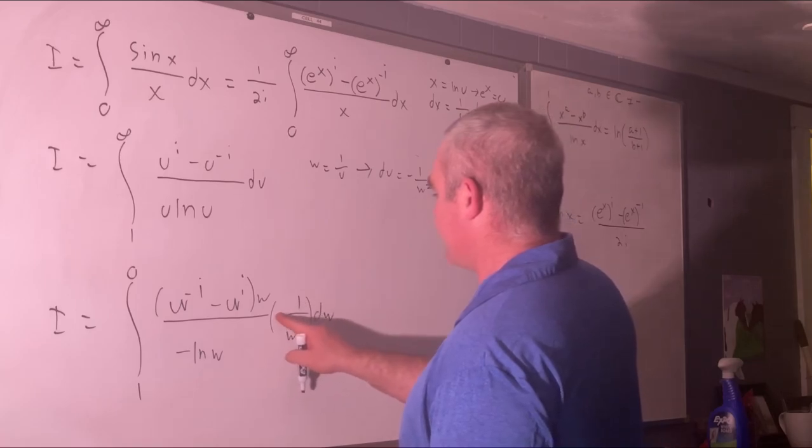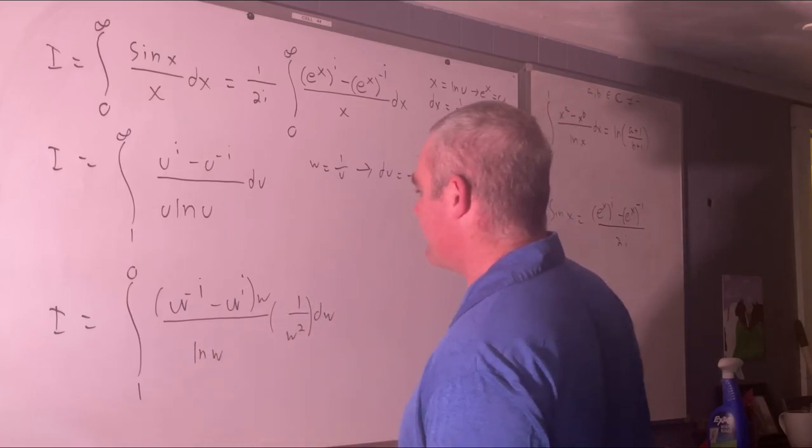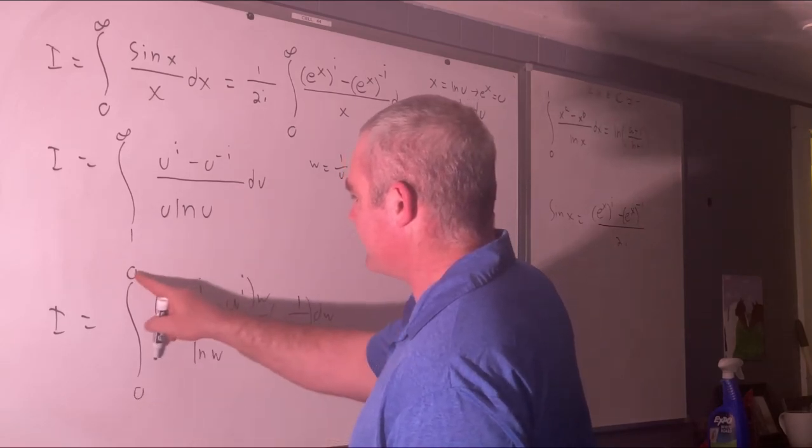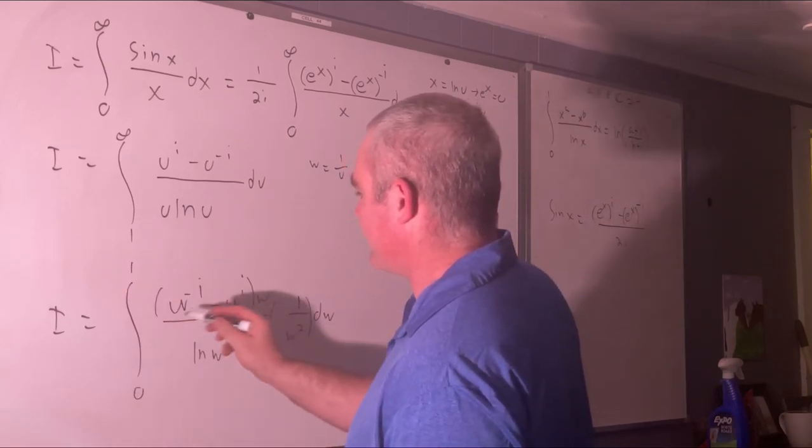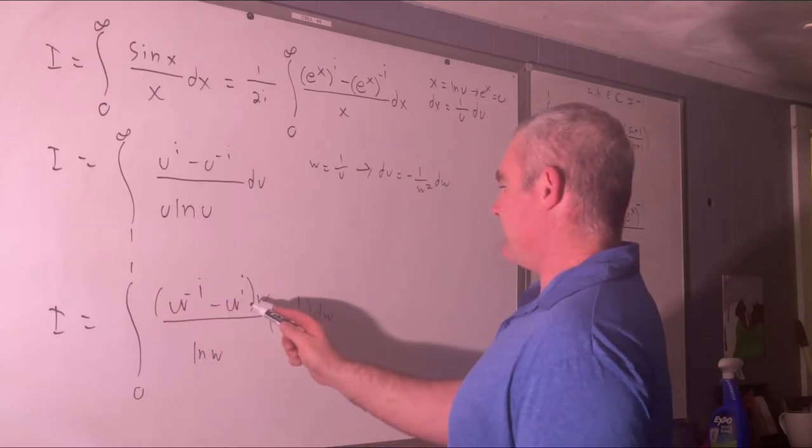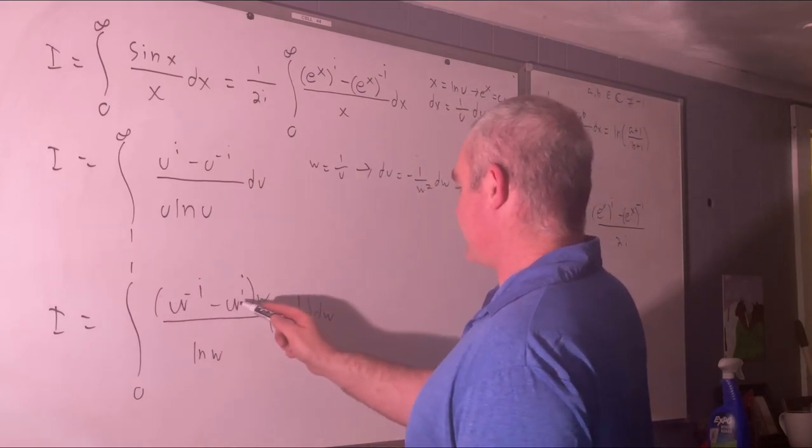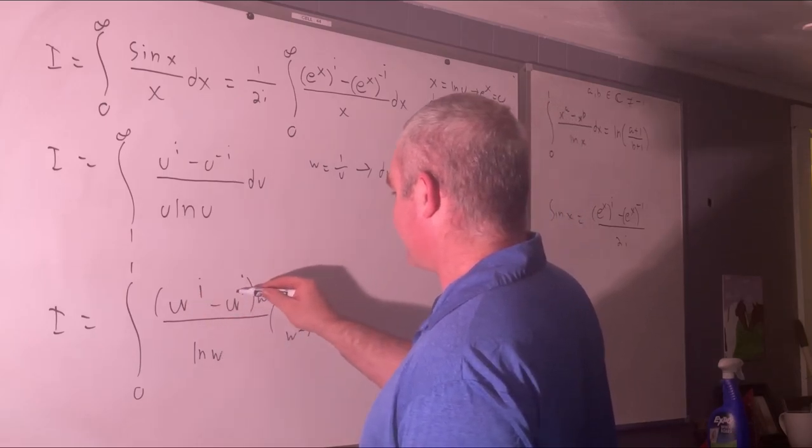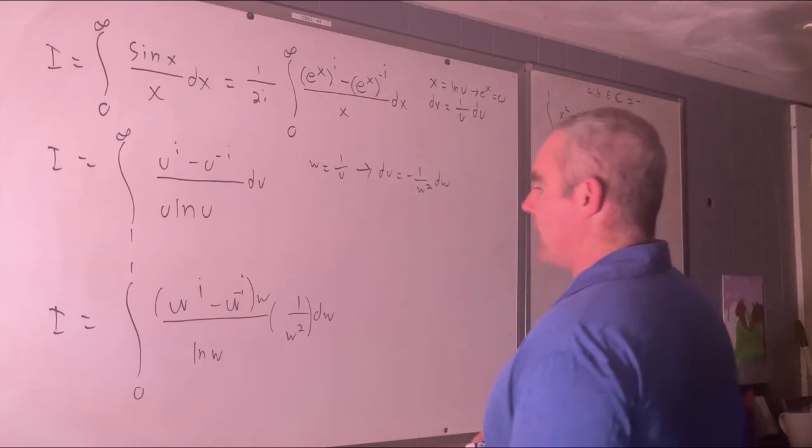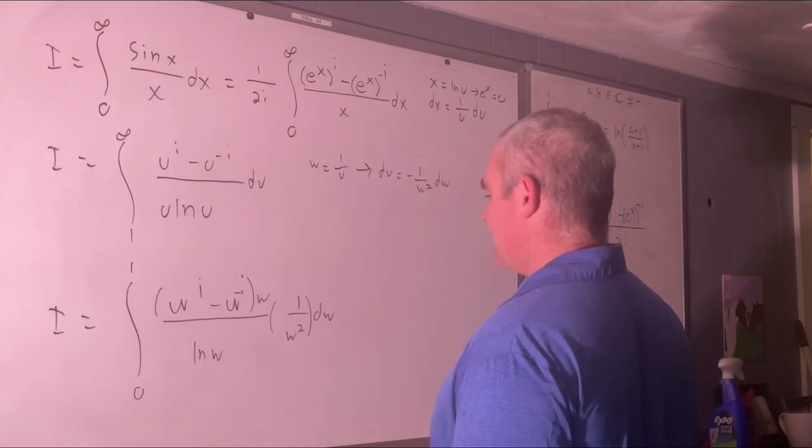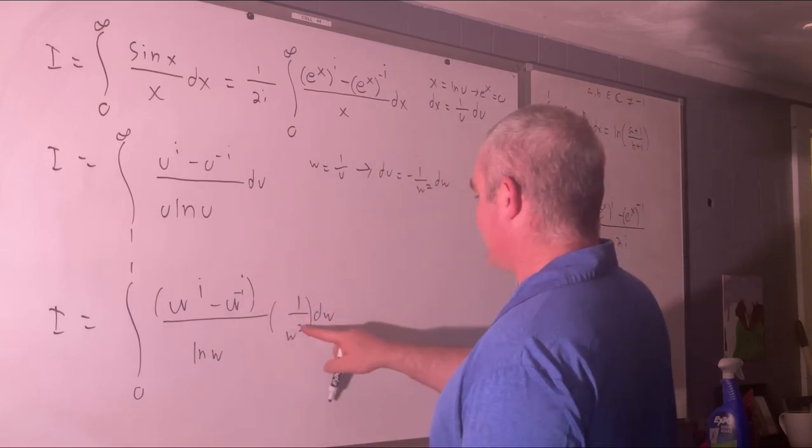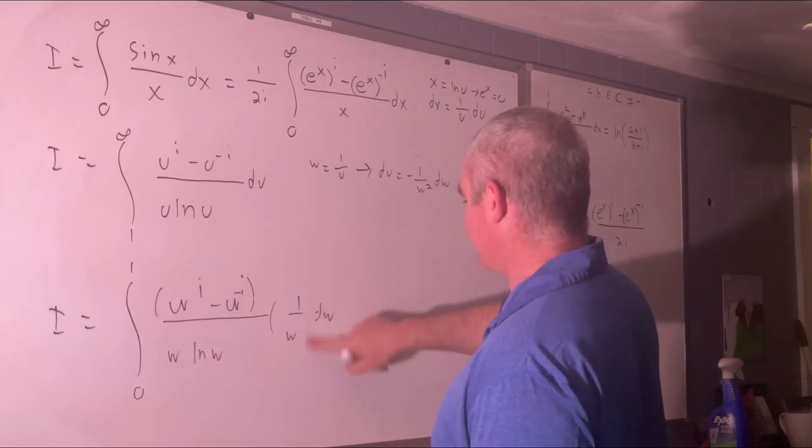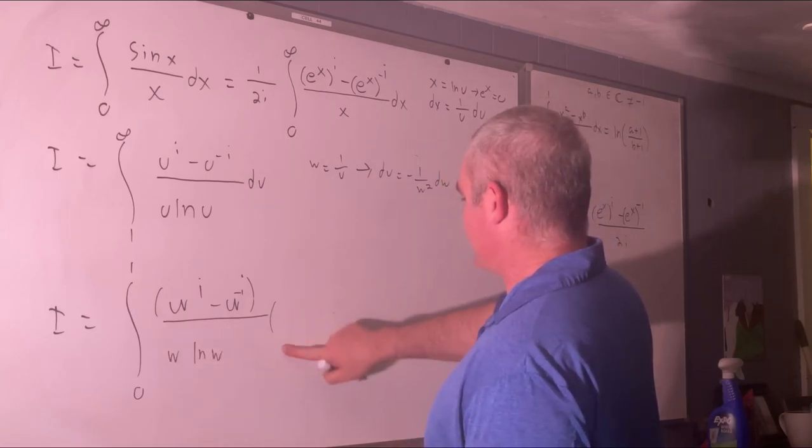Alright, that negative cancels this negative. We're actually going to switch our bounds and introduce a negative sign. We'll multiply this by negative 1. That will just be basically we would have this minus this now. So w to the i minus w to the negative i. That w cancels one of those. We have a w on the bottom.